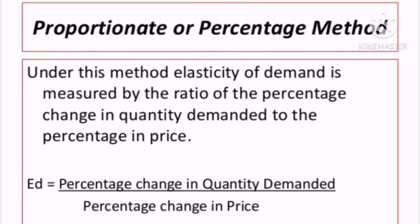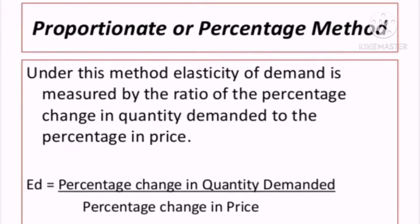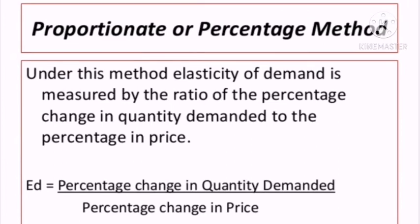The next method is the Proportionate or Percentage Method. Under this method, elasticity of demand is measured by the ratio of the percentage change in quantity demanded to the percentage change in price. So ED equals percentage change in quantity demanded divided by percentage change in price.